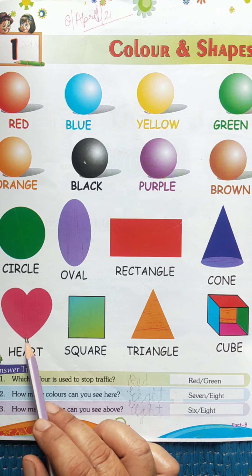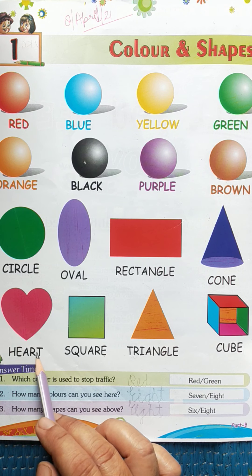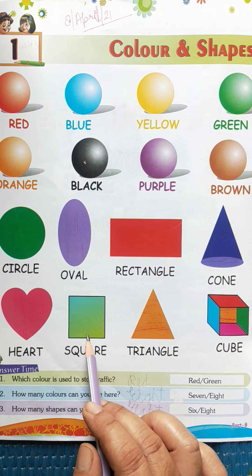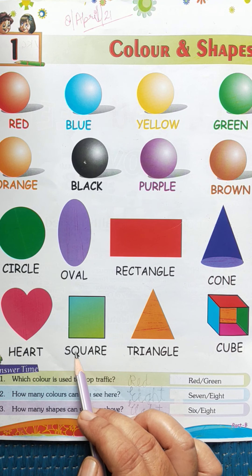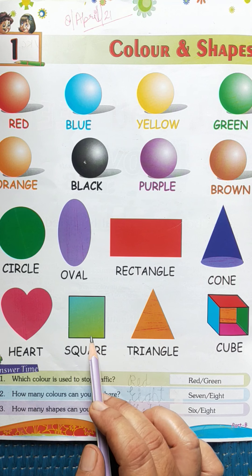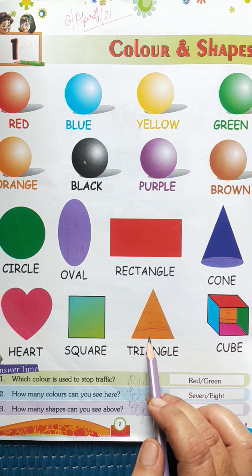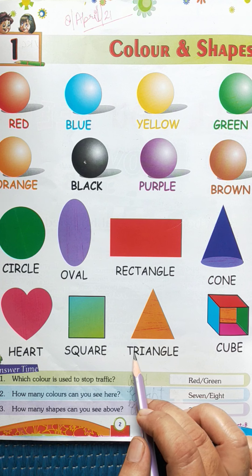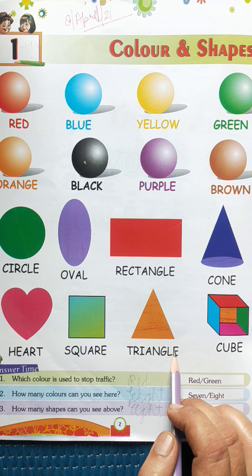This is shape heart, H-E-A-R-T, heart. This is square, S-Q-U-A-R-E, square. This is shape triangle. Spelling is T-R-I-A-N-G-L-E, triangle.